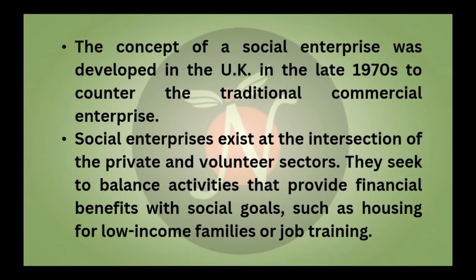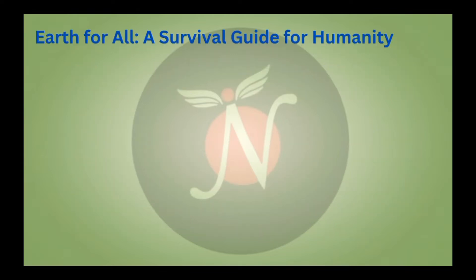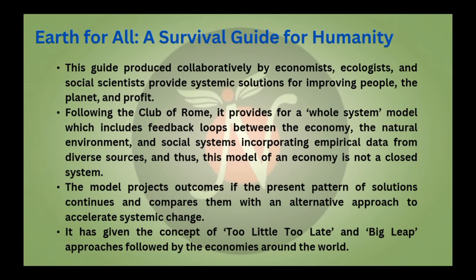Now we will discuss a very important guide called Earth for All: A Survival Guide for Humanity. This guide was basically developed by economists, ecologists, and social scientists, and it provides systematic solutions for improving people, the planet, and profit. Following the Club of Rome, it provides a whole system model which includes feedback loops between the economy, the natural environment, and the social system.